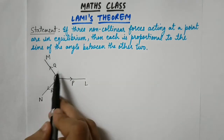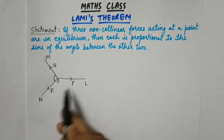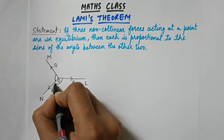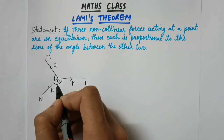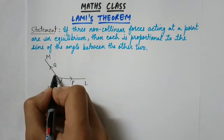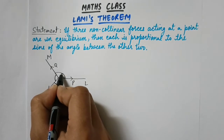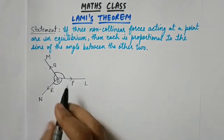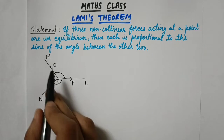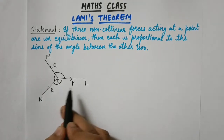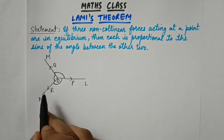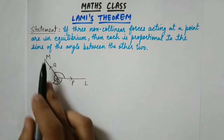For force Q, the other two forces are P and R, and the angle between them is angle NOL. For force R, the angle between P and Q is angle LOM. So we need to prove that P upon sine of MON equals Q upon sine of NOL, which equals R upon sine of LOM.